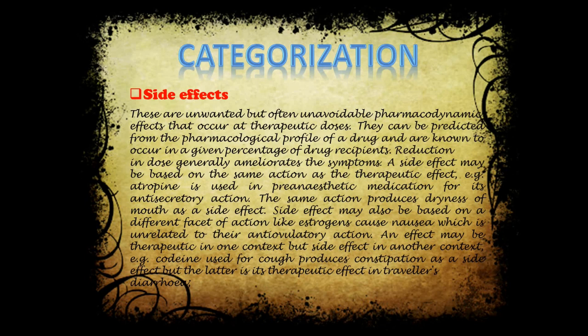A side effect may be based on the same action as the therapeutic effect. For example, atropine is used in pre-anesthetic medication for its anti-secretory actions; that same action produces dry mouth as a side effect. A side effect may also be based on a different facet of action — for example, estrogen causes nausea, which is unrelated to its anti-ovulatory actions. An effect may be therapeutic in one context but a side effect in another — for example, codeine used for cough produces constipation as a side effect, but the latter is therapeutic in traveler's diarrhea.